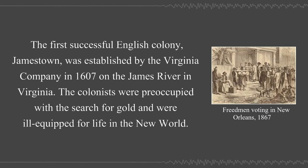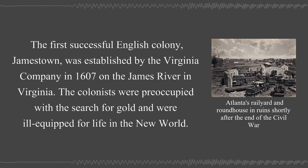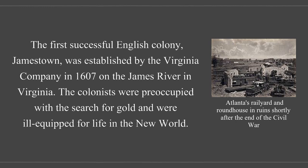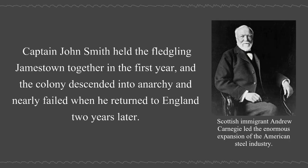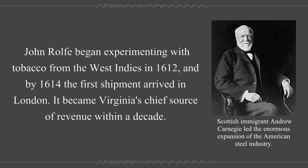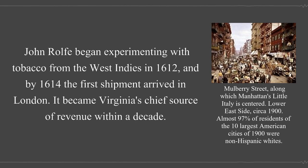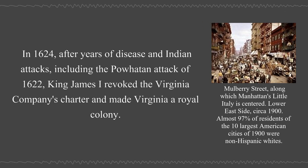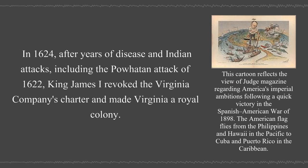The first successful English colony, Jamestown, was established by the Virginia Company in 1607 on the James River in Virginia. The colonists were preoccupied with the search for gold and were ill-equipped for life in the New World. Captain John Smith held the fledgling Jamestown together in the first year, and the colony descended into anarchy and nearly failed when he returned to England two years later. John Rolfe began experimenting with tobacco from the West Indies in 1612, and by 1614 the first shipment arrived in London. It became Virginia's chief source of revenue within a decade. In 1624, after years of disease and Indian attacks including the Powhatan attack of 1622, King James I revoked the Virginia Company's charter and made Virginia a royal colony.